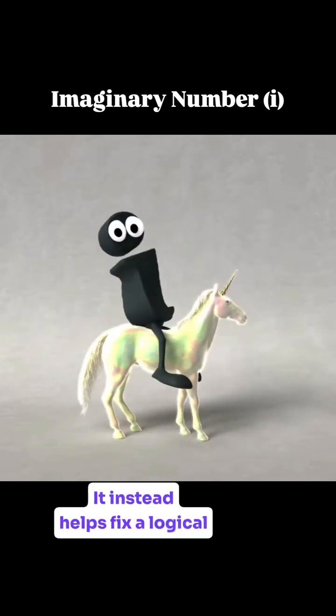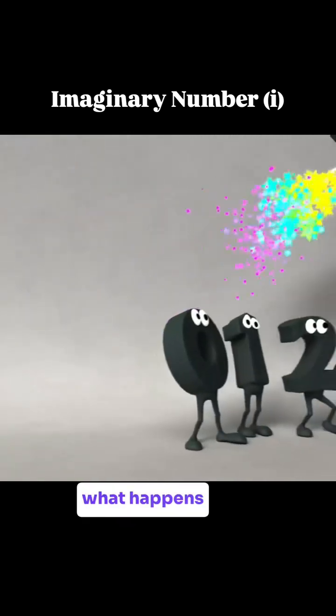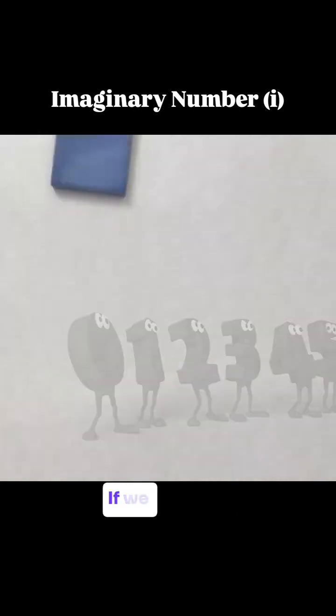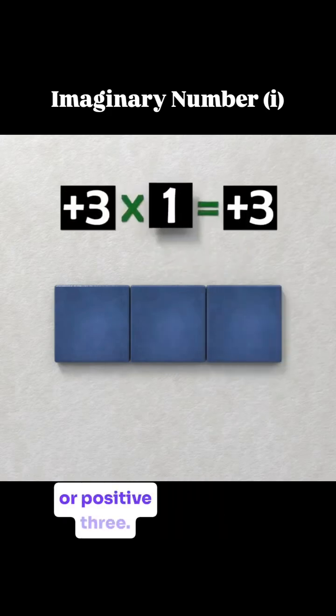It instead helps fix a logical glitch caused by multiplying negative values. First, let's take a quick look at what happens when you multiply with negative values. If we start with a square with an area of 1 and combine 3 of them, we get 3 times 1, or positive 3.